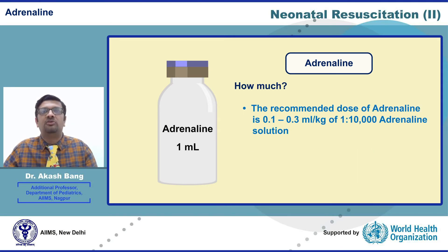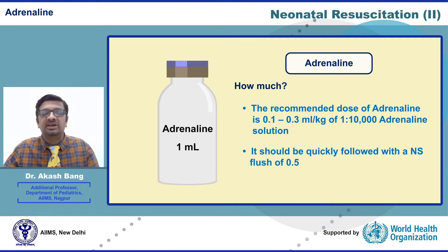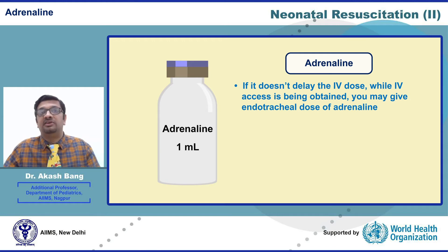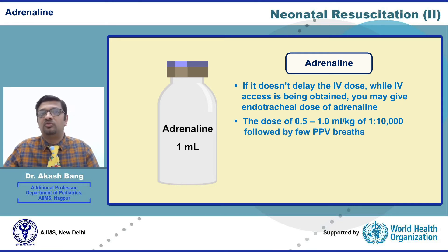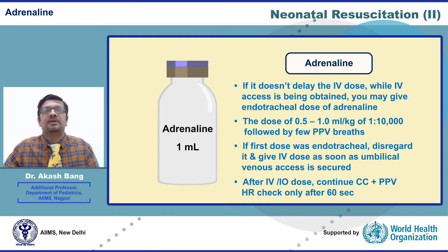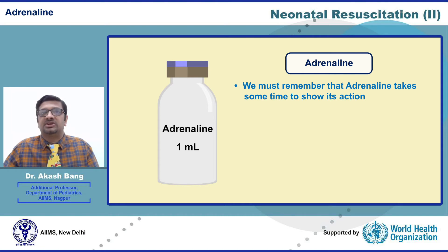The recommended dose of adrenaline is 0.1 to 0.3 ml/kg of 1 in 10,000 adrenaline solution, quickly followed by a normal saline flush of 0.5 to 1 ml. Remember that the available concentration in India is 1 in 1,000, so at least once a day you must prepare a stock solution of 1 in 10,000 by diluting adrenaline 10 times. Only if it does not delay the IV dose, you may give an endotracheal dose of adrenaline — 0.5 to 1 ml/kg of 1 in 10,000 — followed by a few PPV breaths. If such an endotracheal dose is given, it should be disregarded later and an IV dose must be given as soon as umbilical venous access is secured.